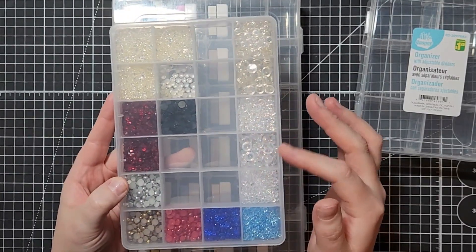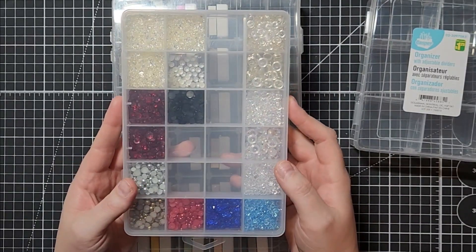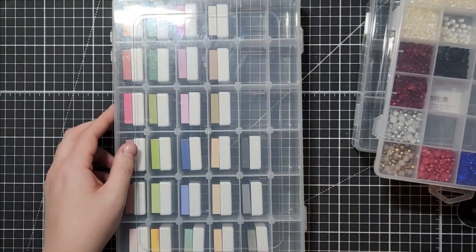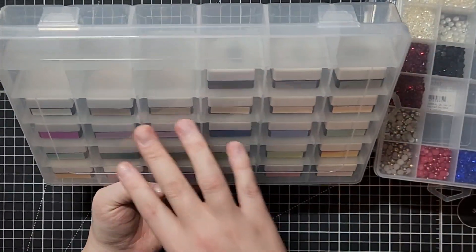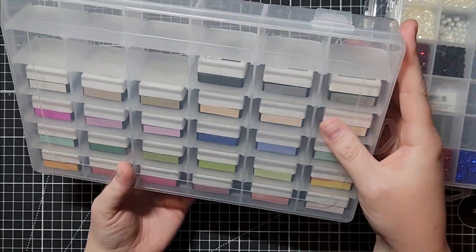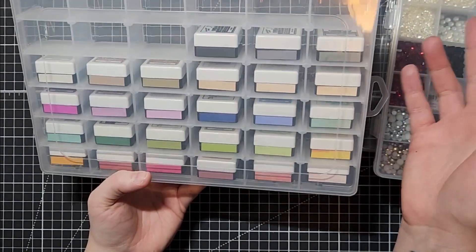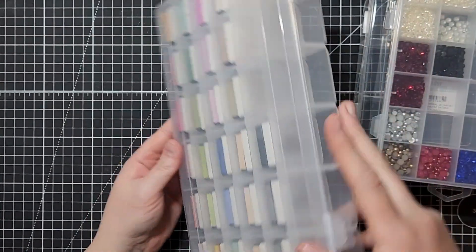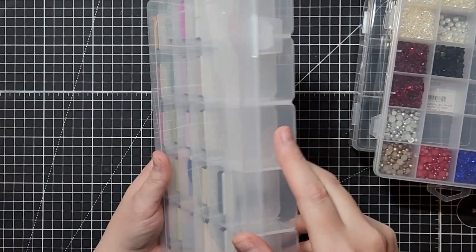These ones I showed during my embellishment video, but this is where I keep all my gems and pearls. This one was probably around maybe two dollars also from the dollar store. This one is where I hold all my ink cubes from Lawn Fawn, and again this is probably maybe closer to three or four dollars but it holds quite a bit.